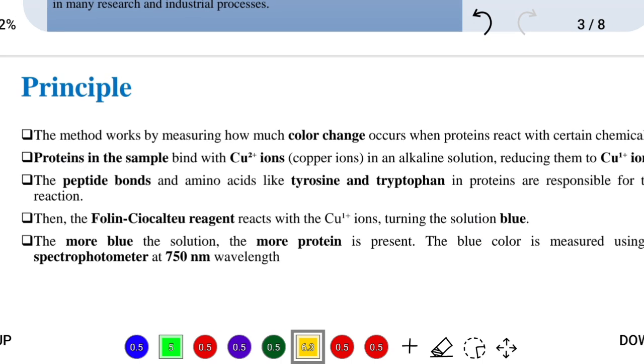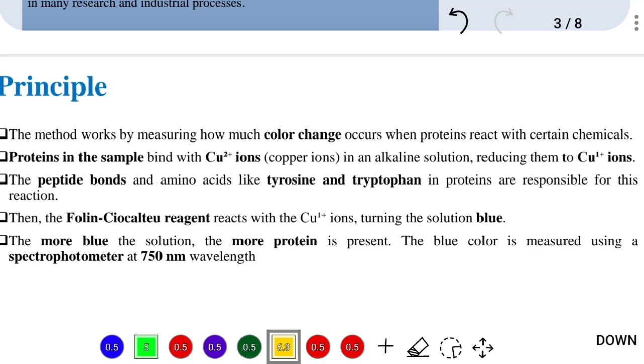So what is the principle of this method? If you have more protein, it means more amide bonds are present, and that's why you get more purple color or dark blue color.